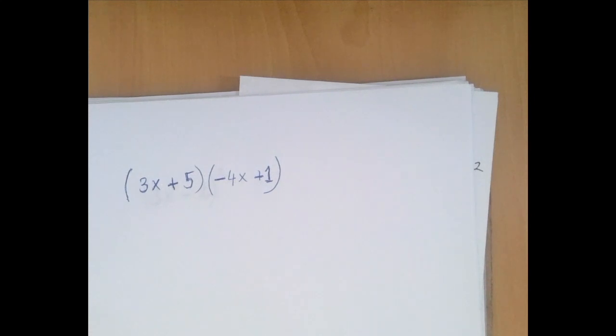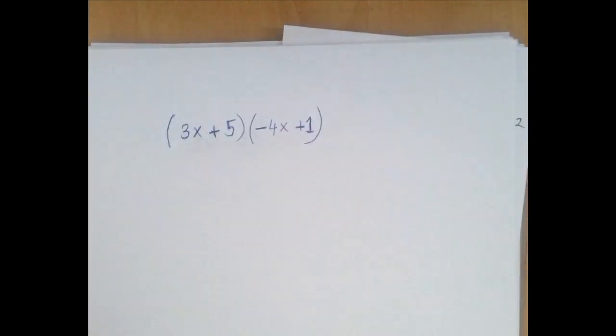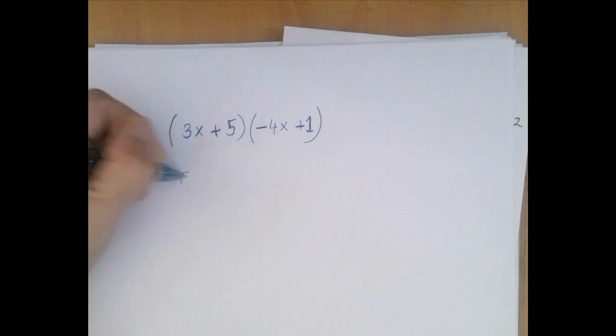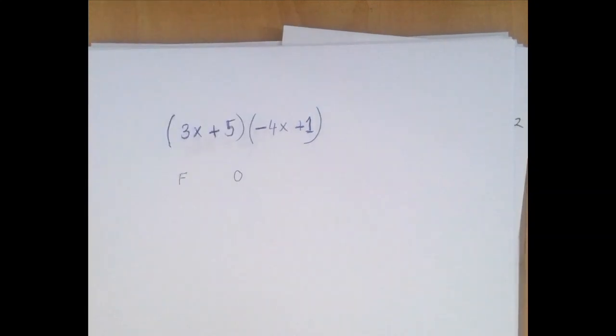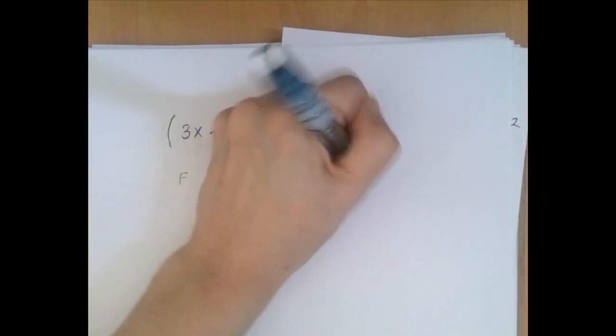One way to do that is with FOIL, where F is short for first with first, O with outer, I with inner, and L for last.